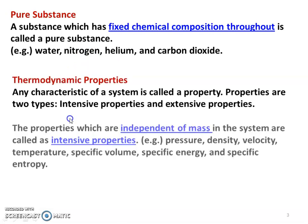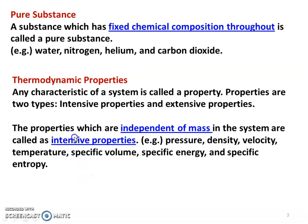Thermodynamic properties — what is a thermodynamic property? Any characteristic of the system that defines the system is called a property. There are two types: intensive property and extensive property. Intensive properties are independent of the mass. Examples: pressure, density, velocity, temperature, specific volume, specific energy, and specific entropy.